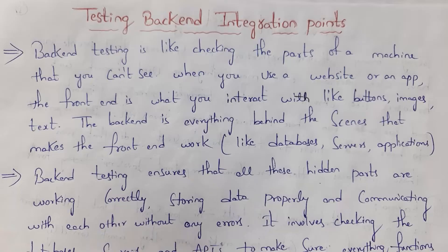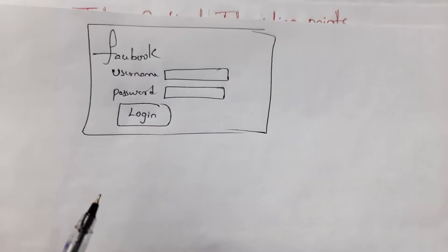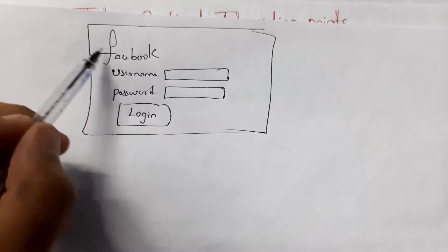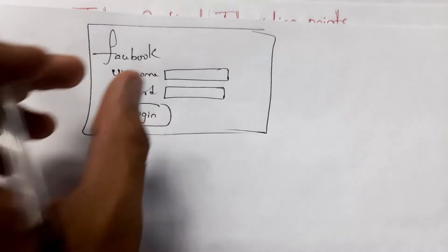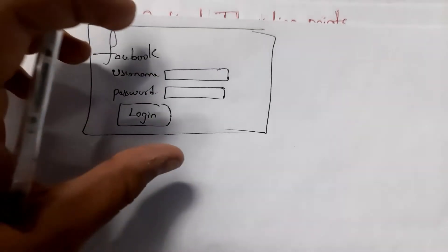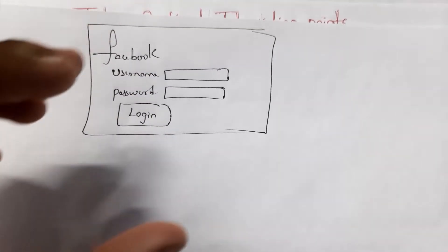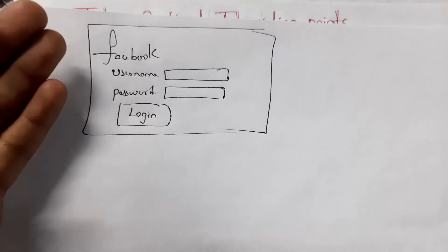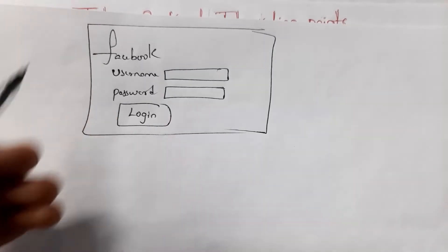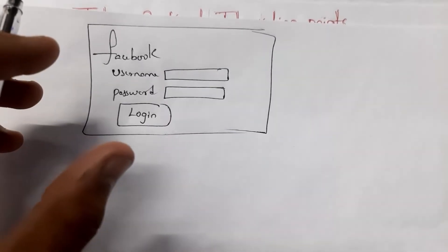I will give an example so that you can clearly understand this. Let's consider the Facebook app or website. Whenever you open Facebook, you can see the Facebook image, username field, password field, and login button. Whatever you see on screen, we call it the frontend.